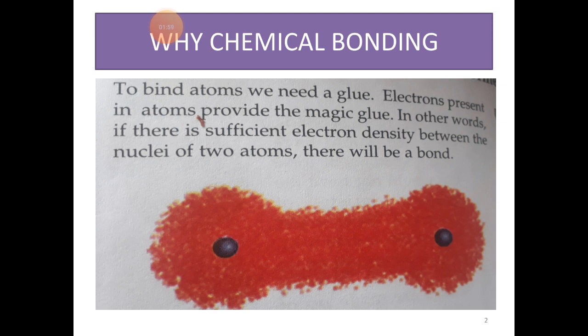So the atoms, molecules, when they combine together, they result in the formation of molecules. And these molecules of various shapes, various geometries, they lead to the formation of different material and various substances that are around us. So, you have understood why bonding is important. If you just see on the screen, to bind atoms we need glue. We need some vital force to bind atoms together. The electrons present in atoms provide that magical glue.